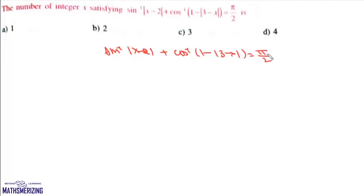This is only possible if it matches the identity sin⁻¹(x) + cos⁻¹(x) = π/2. So this is true when |x-2| equals 1 - |3-x|.